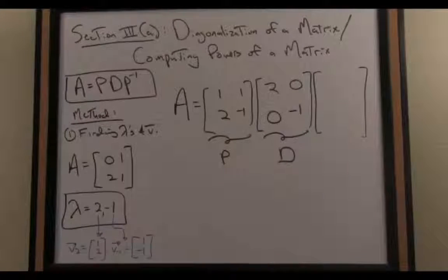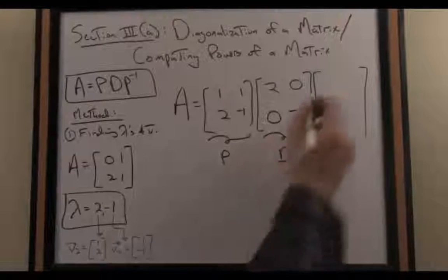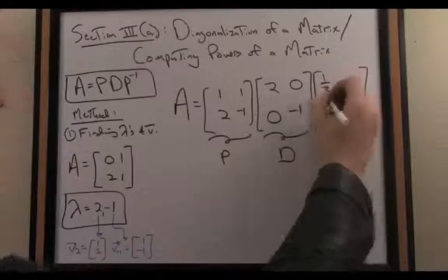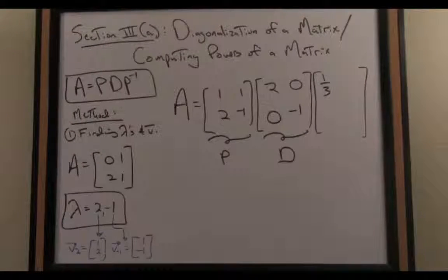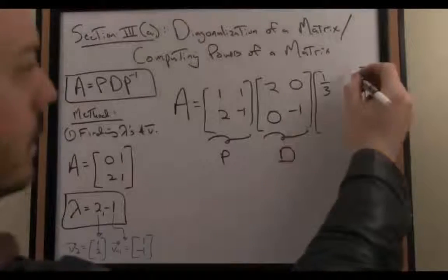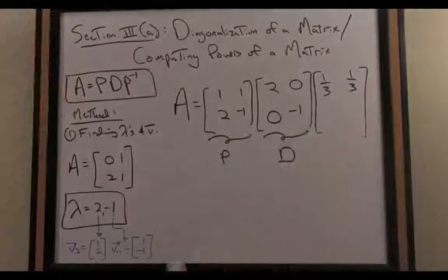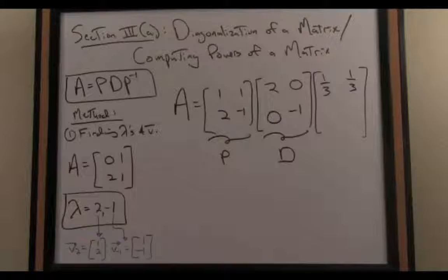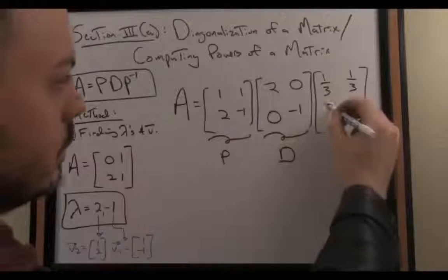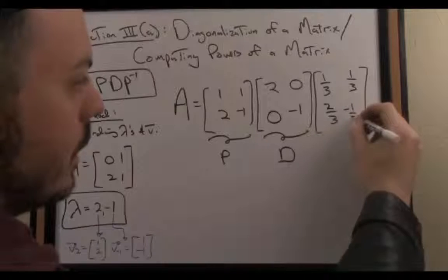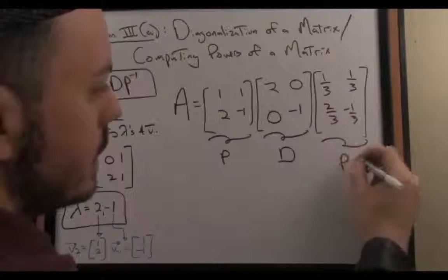I compute the inverse of P. I've done that for us beforehand. And you can check that indeed, this matrix P inverse, when I multiply it by P, does end up equaling the identity matrix. There is my P inverse matrix.